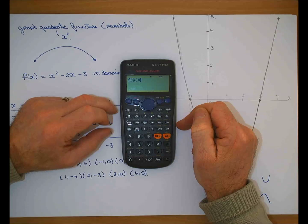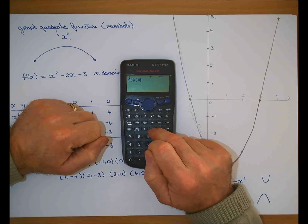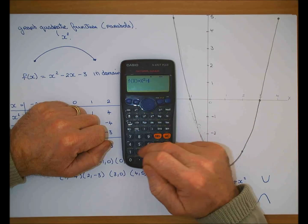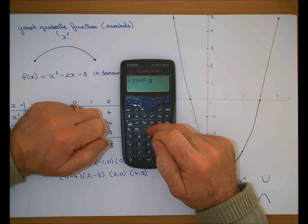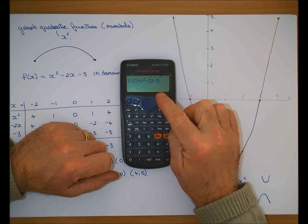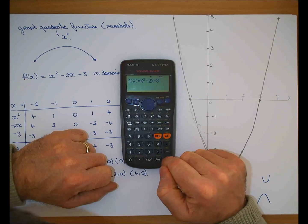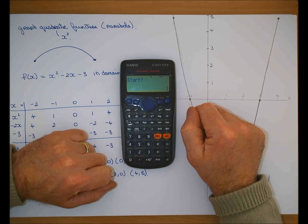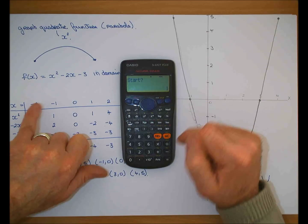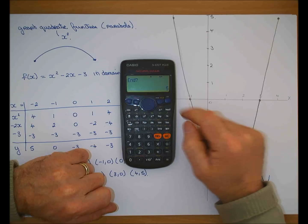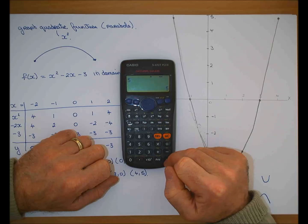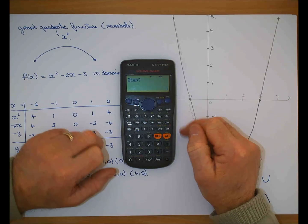To put in the x you have to hit the alpha, and there's a red x on that button. See the x appearing? To be squared. Minus 2 times, to put in the x it's alpha x, minus 3. And that's my function: x squared minus 2x minus 3. And I hit equal. And it says start. And start means what x value do you want to start at? Minus 2 equals. And end, what x value do I want to end at? 4 equals.